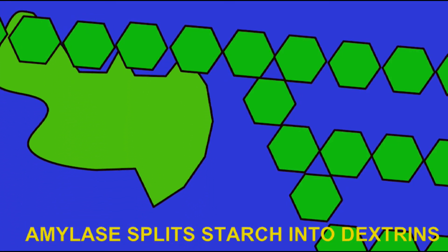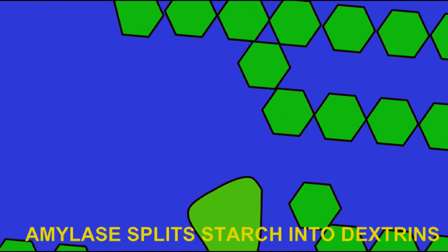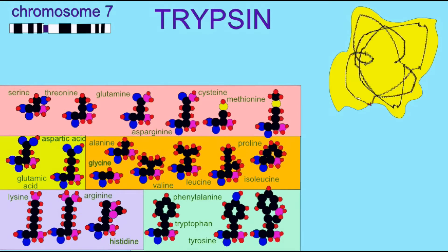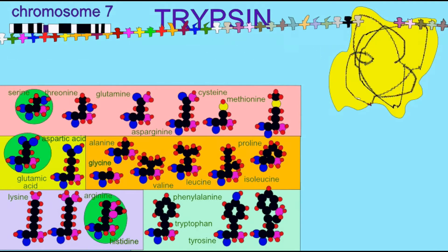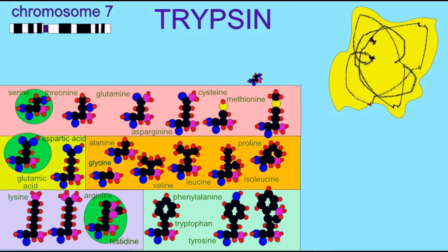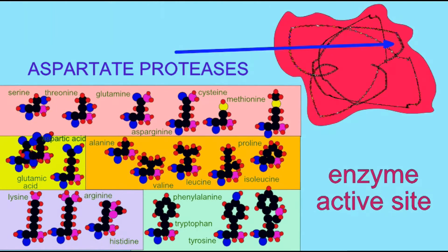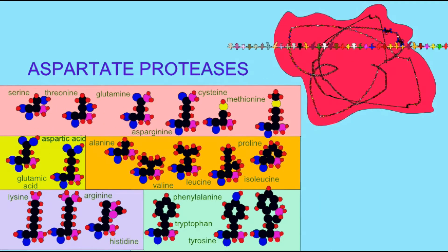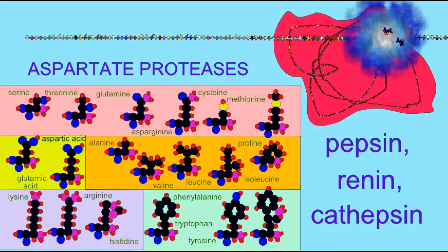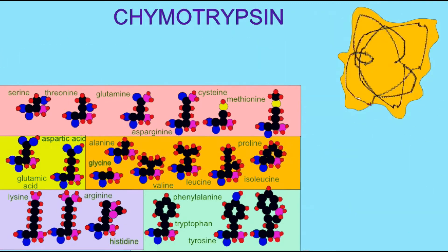Since enzyme shape is essential to the function of the enzyme, anything that changes enzyme shape can ultimately change the level of enzyme function, and can perhaps even change the enzyme shape to the point where it is no longer functional. Such an enzyme is said to be denatured.